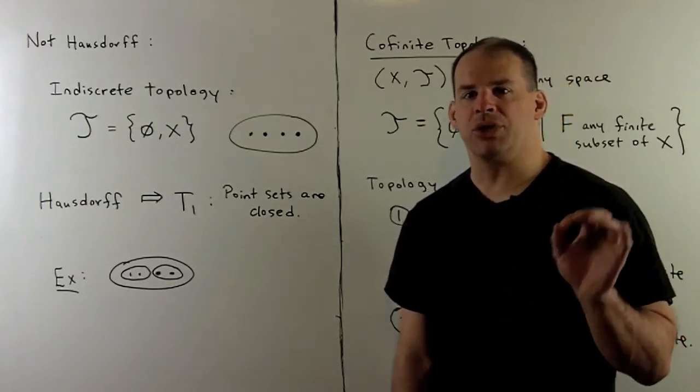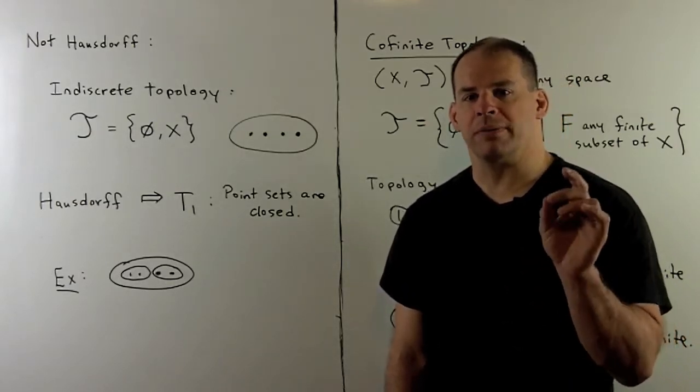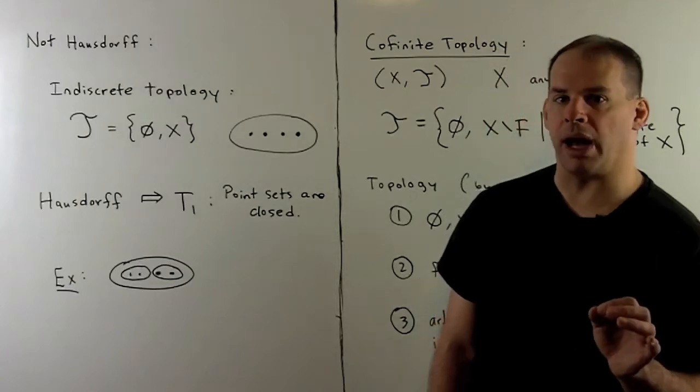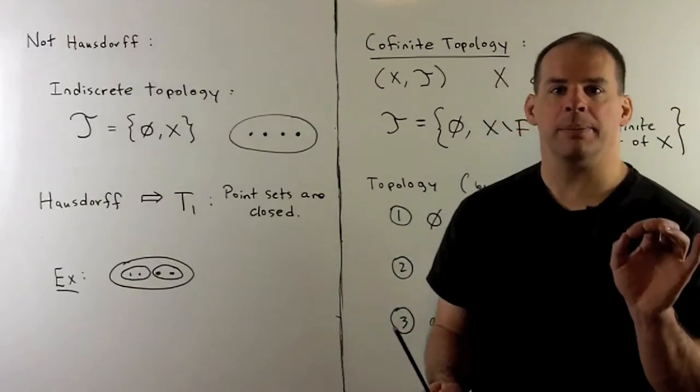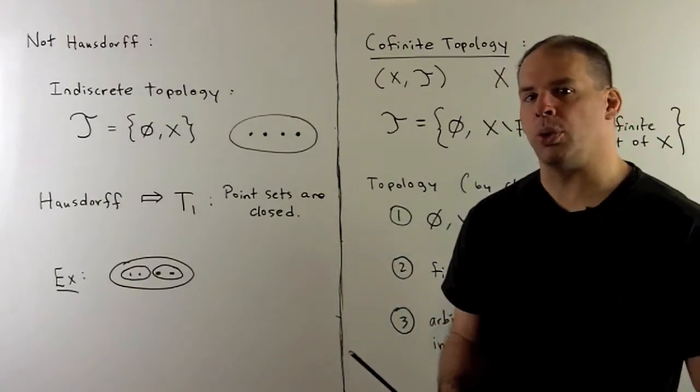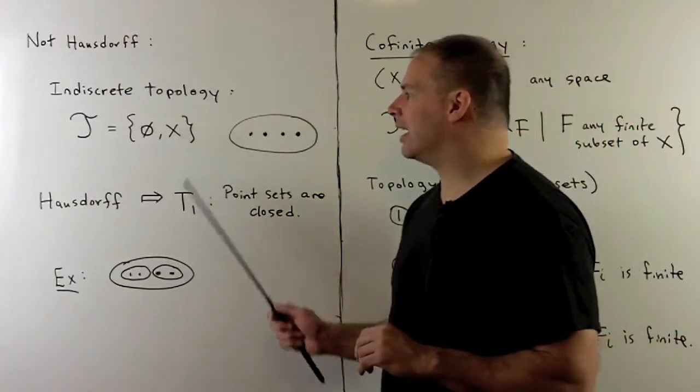Now, we're interested in examples that are not Hausdorff, so we can first go to the indiscreet topology. Here, X is any space that's not empty. For topology, we have two open sets: the empty set and X itself.